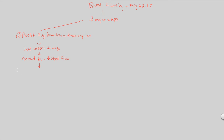The next step in making a platelet plug is the following: blood vessels contain collagen within them, and when a vessel is damaged, those collagen fibers — which are structural components within the blood vessels — are going to start sticking out at the damaged area. This will have an indirect but important role in creating a clot and stopping blood flow.